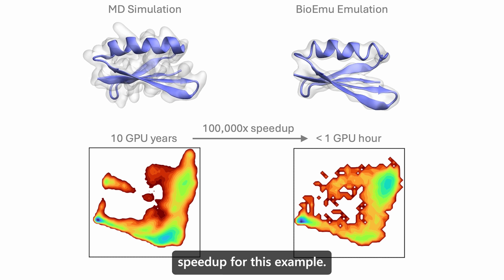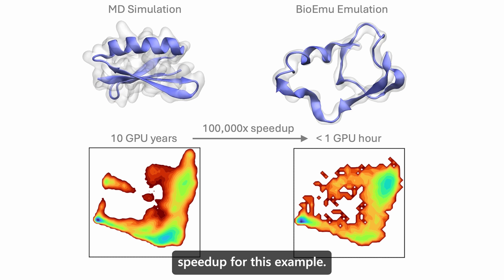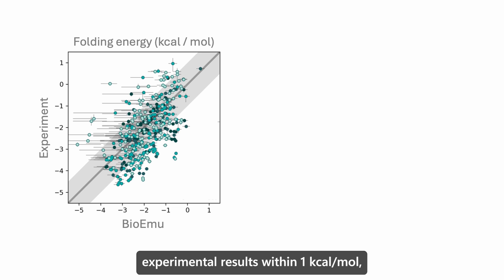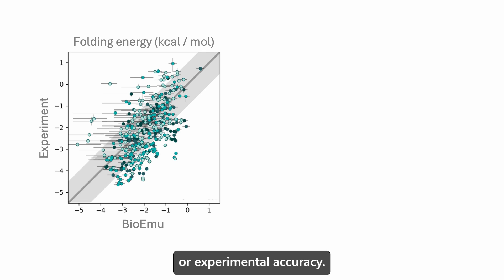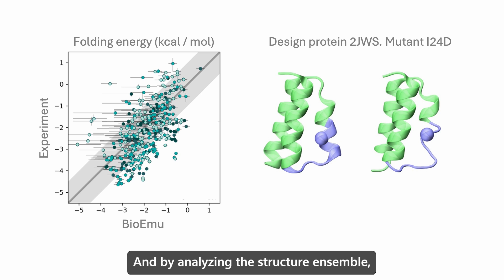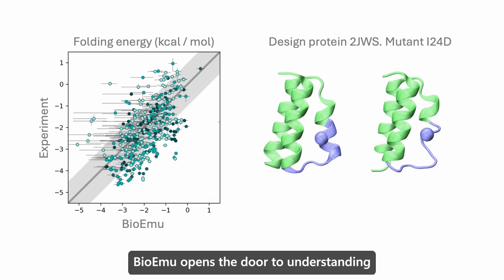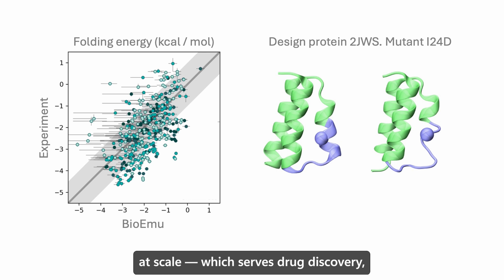BioEMU also predicts protein stabilities and the effects of mutations, matching experimental results within one kilocalorie per mole — experimental accuracy. By analyzing the structure ensembles, we can understand the stabilizing and destabilizing effects of protein mutants. BioEMU opens the door to understanding a key aspect of protein function at scale, which serves drug discovery, protein design, and generates deeper biological insight.